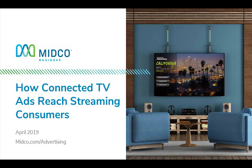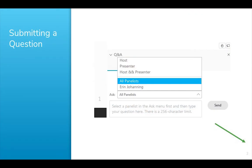First, let's take care of some general housekeeping. Participants are all automatically muted. If you do have a technical issue, please submit it via the Q&A window on the right side of your screen. Use the dropdown to select the host rather than the panelist. We will have a Q&A session at the end. You can submit a question any time during the presentation. Just be sure to use the Q&A window, and use the dropdown to send your question directly to the panelist rather than the host.